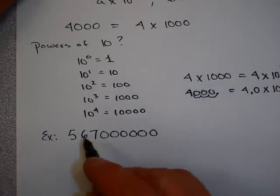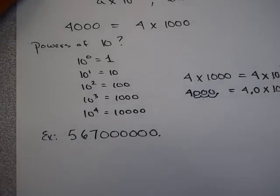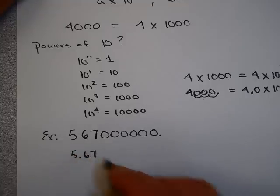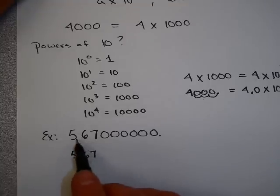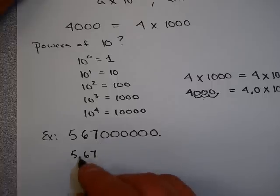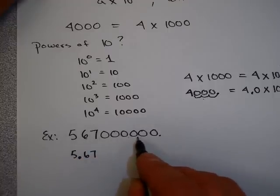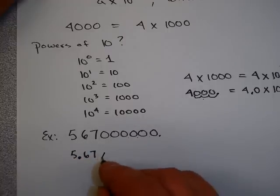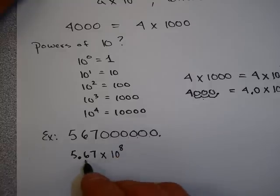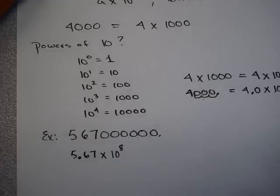Let's try another one. This really large number — 567 million — has the decimal place at the end, and I want to move it so it reads 5.67. To get from 5.67 to 567 million, I need to move the decimal place 1, 2, 3, 4, 5, 6, 7, 8 times. So I'm going to have to multiply by 10 to the 8th power. Since 5.67 is much smaller than 567 million, I need to multiply by something big.